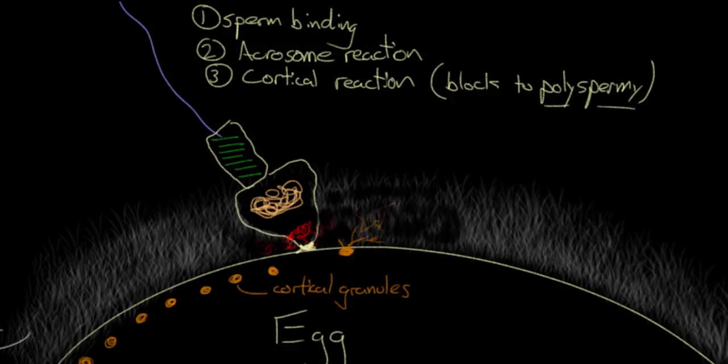Occasionally that does happen, and it can result in a zygote that fails. But for the most part, as these cortical granules dissolve away all the sperm binding glycoproteins of the zona pellucida, other sperm just can't get in and they bounce off as they arrive.